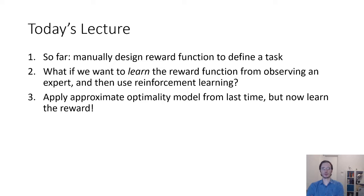What we're going to learn about today is how we can apply this approximate model of optimality, formalized as an inference problem from last time, to learn a reward function rather than just directly learning a policy from a known reward. And this is called the inverse reinforcement learning problem.